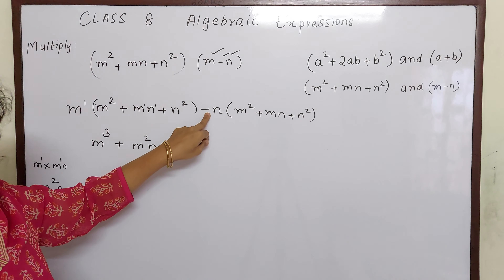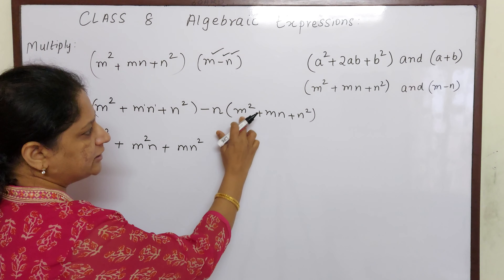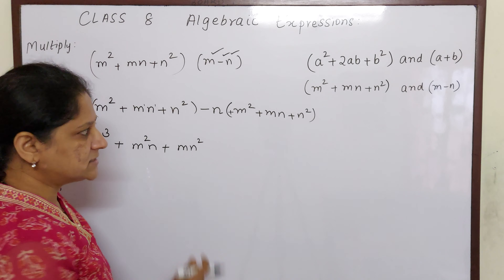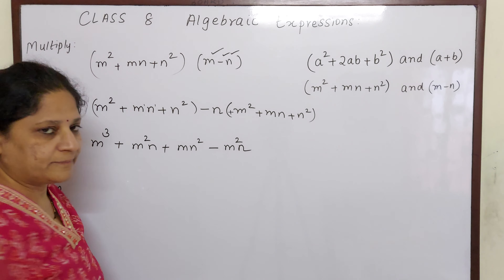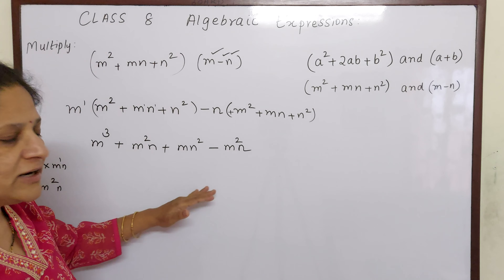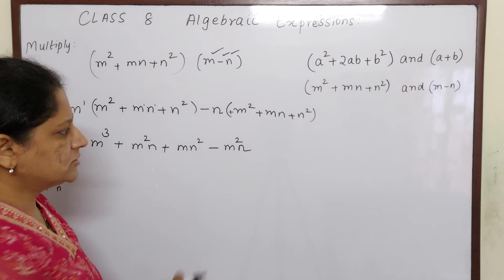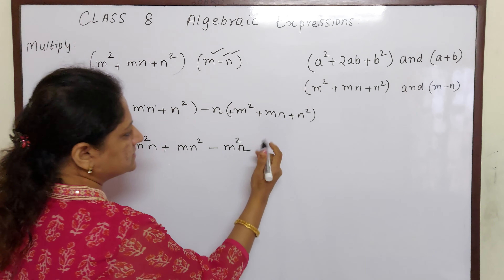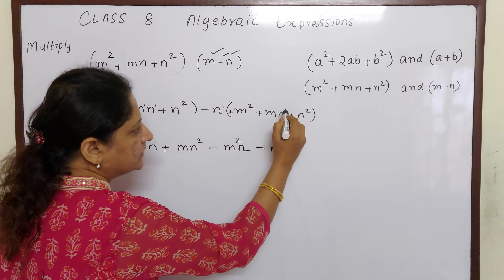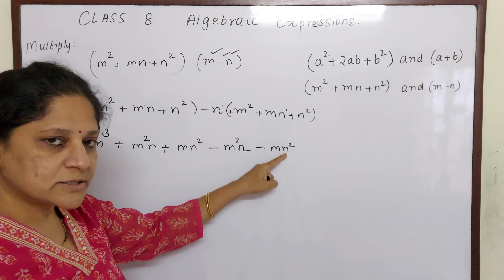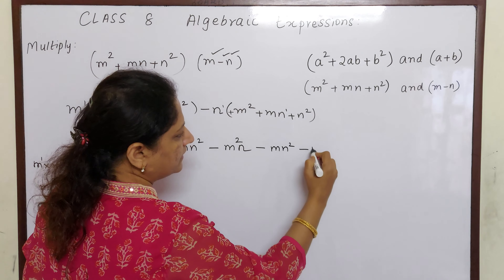Outside the second bracket there is a minus sign, so the signs inside will change. Minus n into m²: no sign means plus, so minus × plus = minus, giving −m²n. Then minus into plus: minus, n into mn = mn², giving −mn². Then minus into plus minus: n¹ × n² = n³, giving −n³.